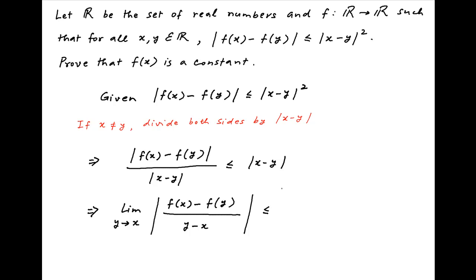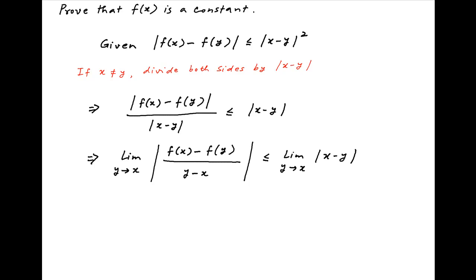This is less than or equal to the limit as y tends to x of the absolute value of x minus y. Now note that as y tends to x, the right-hand side tends to 0.